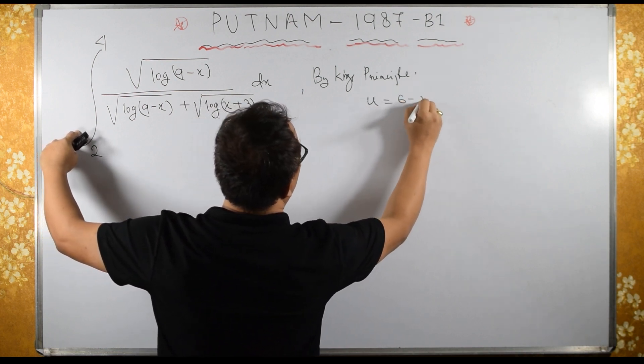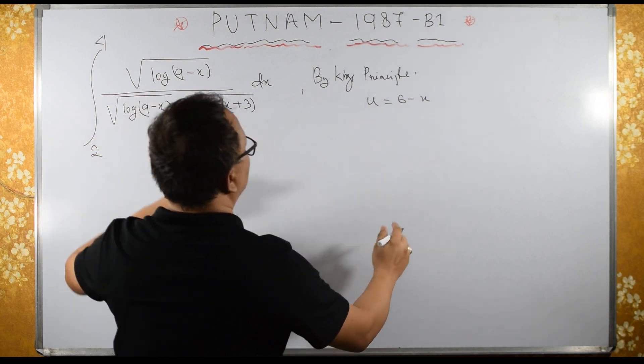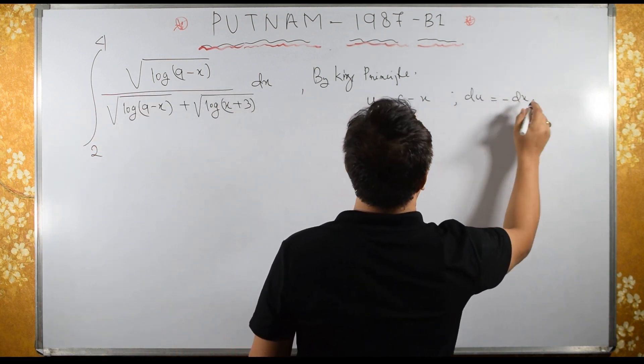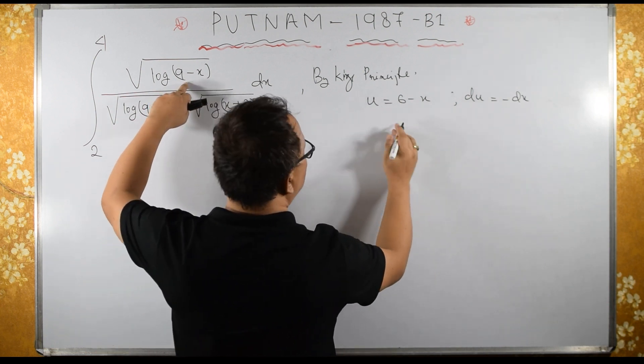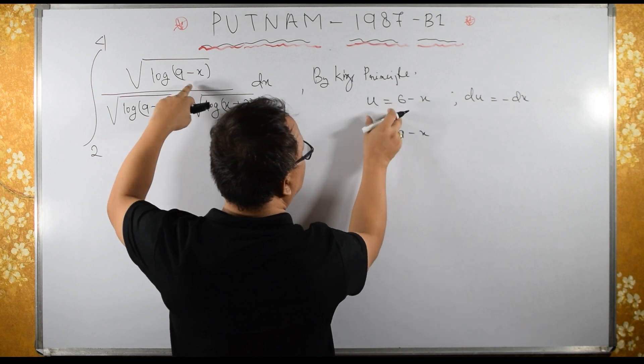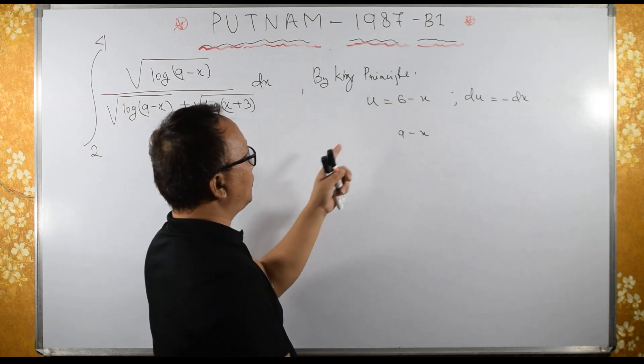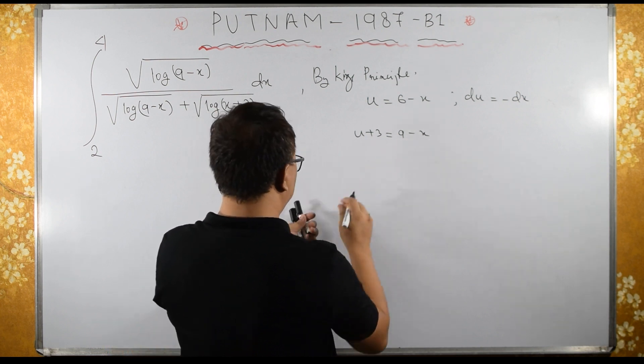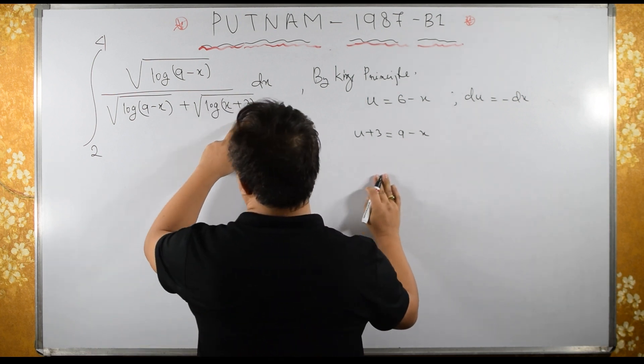So let us substitute u equals 6 minus x, then du equals minus dx. Then how about 9 minus x? So I need 9 minus x; let us add 3 on both sides.